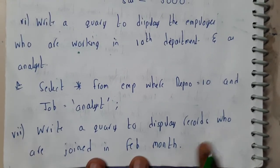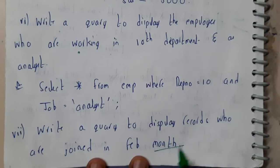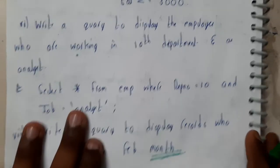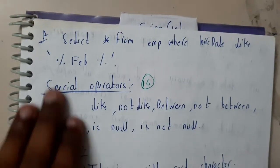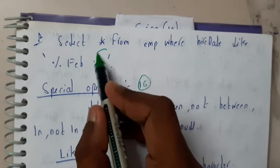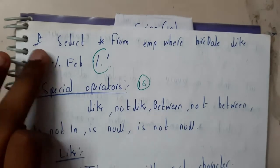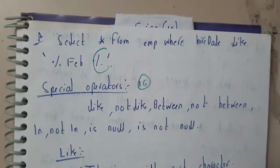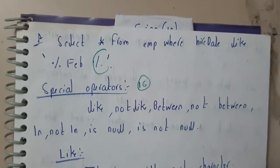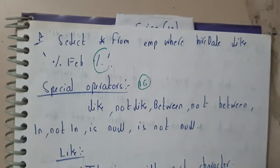The last query is to display records of employees who joined in February. For this kind of date-related condition, we will be using special operators, which will be discussed in the next tutorial. Once we go through special operators it will be clear. Let us meet in the next tutorial — thank you for watching.